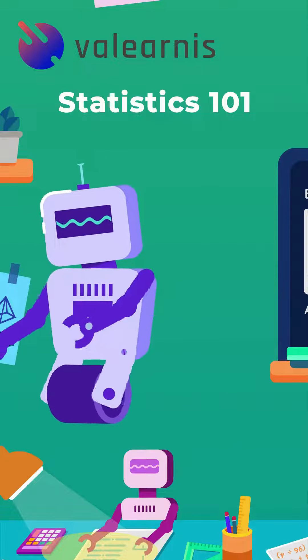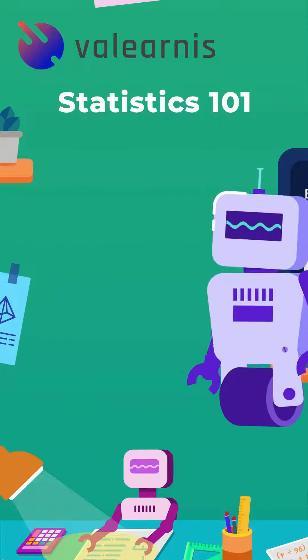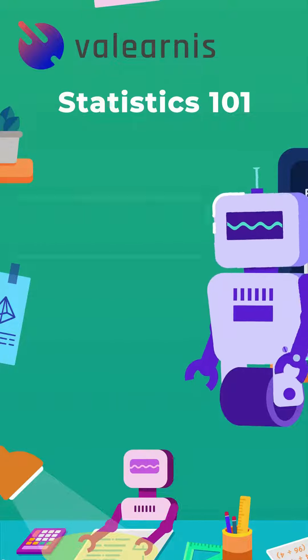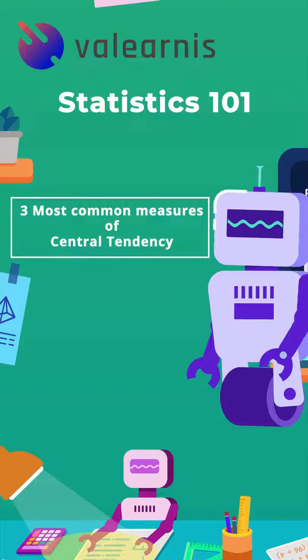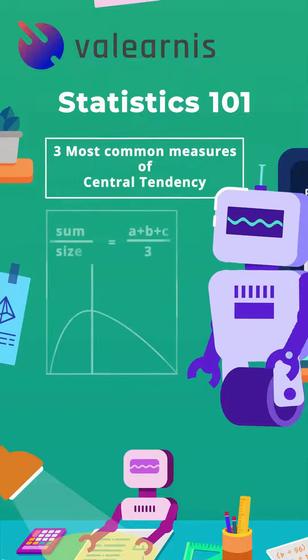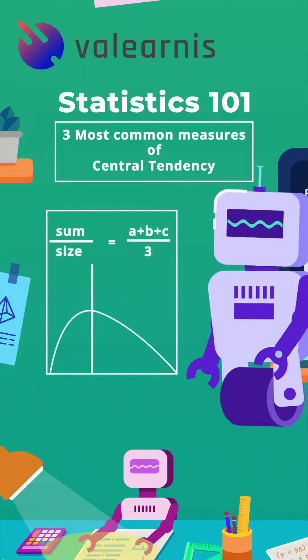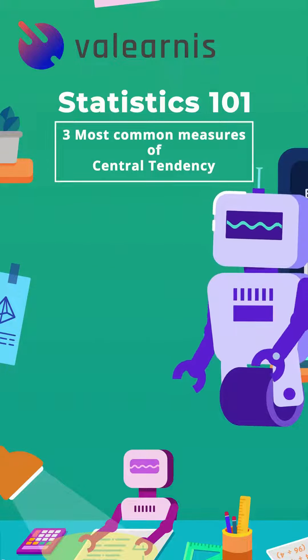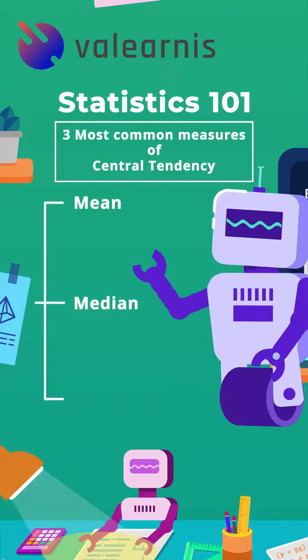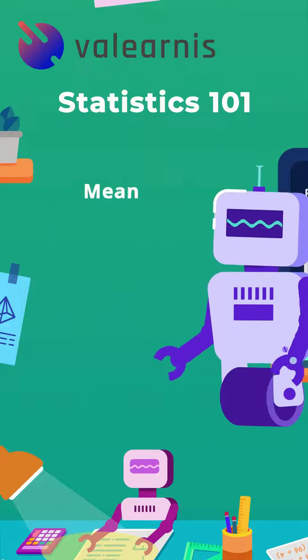Welcome to Statistics 101 with Valernis. Today we will look at the three most common measures of central tendency, all of which measure a kind of average value of your data. These are called mean, median, and mode.